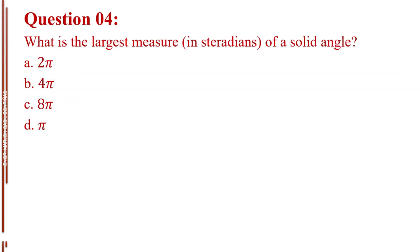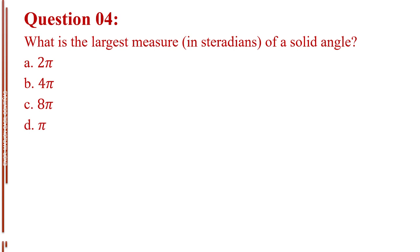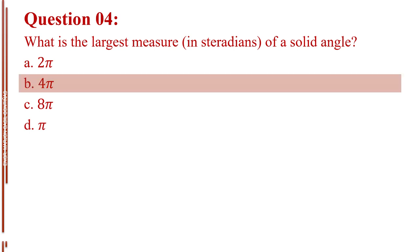Question number 4. What is the largest measure in steradians of a solid angle? Letter A, 2 pi. Letter B, 4 pi. Letter C, 8 pi. Letter D, pi. The answer is Letter B, 4 pi.